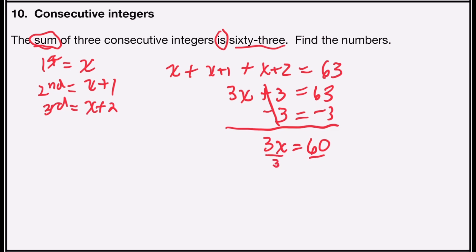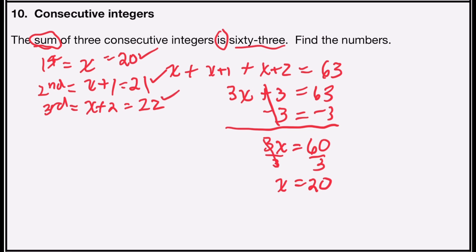Now I'll divide by 3 to make my coefficient equal to 1. 3 divided by 3 is 1x, and 60 divided by 3 is 20. So my first integer is 20. My second integer will be 20 plus 1, which is 21. And my third integer will be 20 plus 2, which is 22. There are other ways to solve this type of problem, but it helps to define all three variables, because as you'll see in the next two problems, sometimes the equation becomes more complicated.